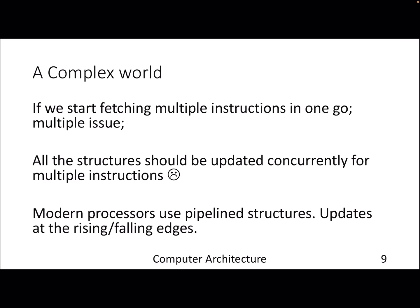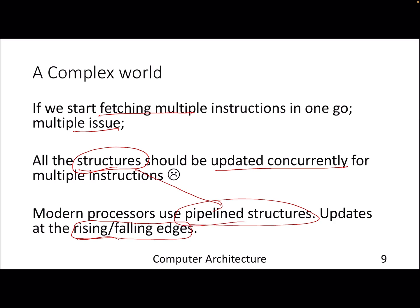So far we have looked at a simple processor that fetches one instruction at a time — not a superscalar. If we make it superscalar, we fetch and issue multiple instructions, and all the micro-architectural structures must be updated concurrently. For example, with a fetch width or issue width of four, four instructions can enter the reservation station and ROB in the same cycle. You can use rising/falling edge updates or pipeline the structures, so latency is amortized and ILP remains largely intact.